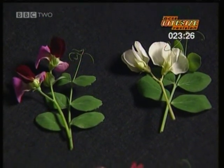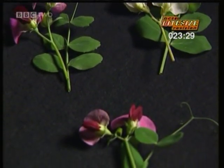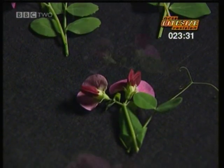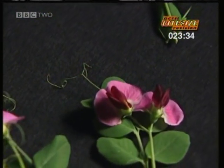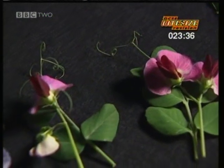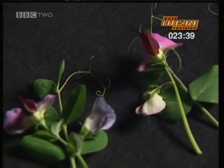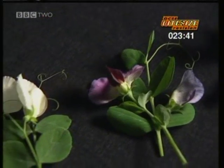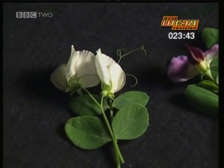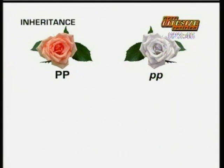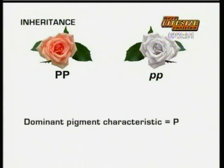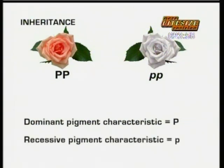Gregor Mendel discovered that certain characteristics of pea plants were dominant and appeared more frequently in offspring, and that others were recessive and appeared less frequently. In the case of Mendel's peas, the pink flower characteristic is dominant, while the white flower characteristic is recessive. The dominant pigment characteristic, pink, is shown as a capital P, while the recessive pigment characteristic, white, is shown with a small p.